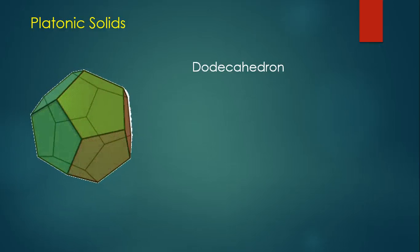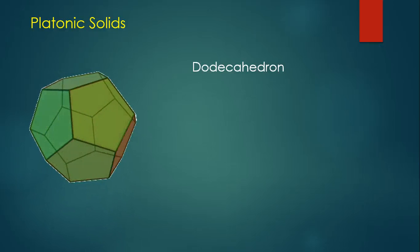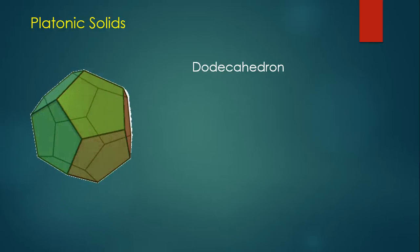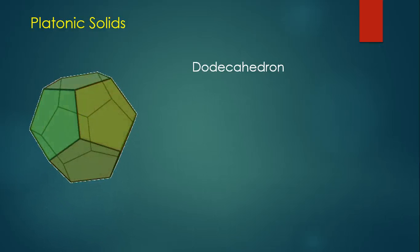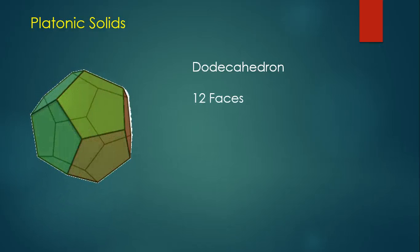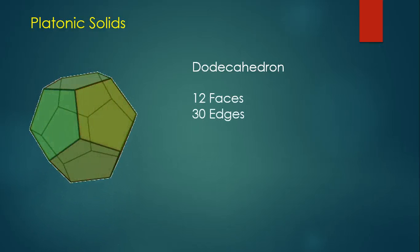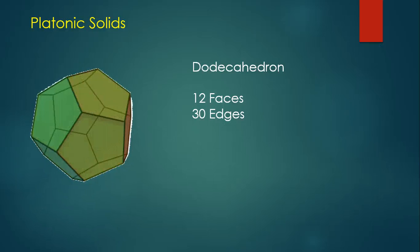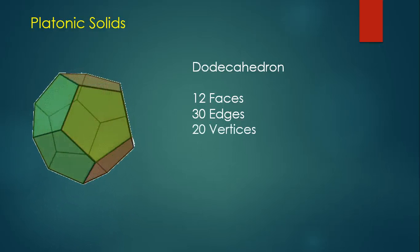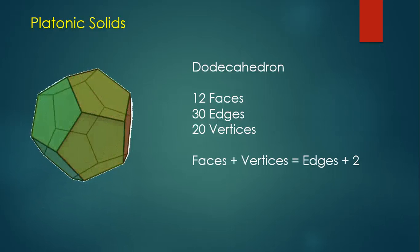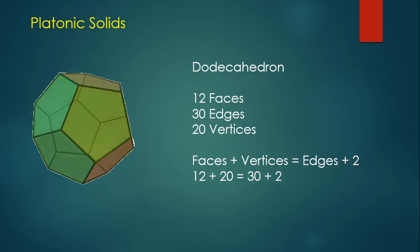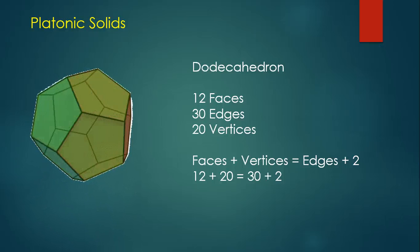There's one last platonic solid: the dodecahedron. It's the only platonic solid that has faces that are regular pentagons. It has a total of 12 faces, 30 edges, and 20 vertices. Verifying with Euler's theorem shows that 12 plus 20 does equal 30 plus 2.